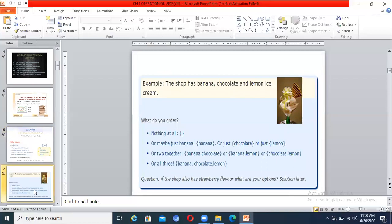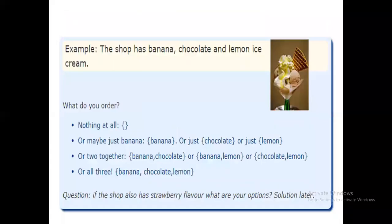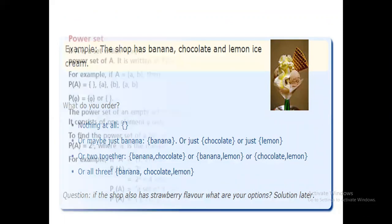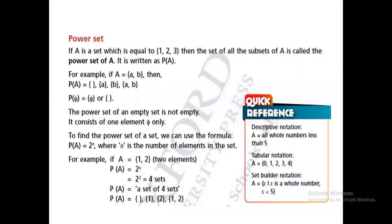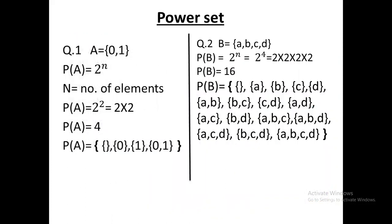We discussed a daily life example where the power set is used. I gave you an example of a shop that has banana, chocolate, and lemon ice cream — what will be the options for a shopkeeper. We made the subsets of those options. Then we moved to the proper definition from your book: if set A equals {1, 2, 3}, then the set of all subsets of A is called the power set of A.